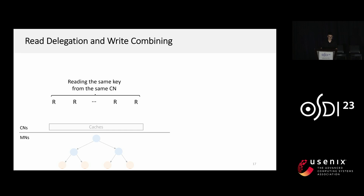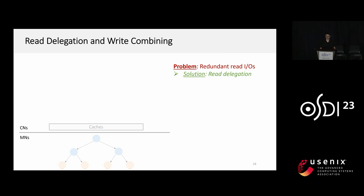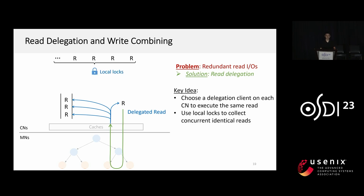The second design of SMART is the redelegation and write combining technique. For reads, when several clients read the same key from the same compute node, they conduct identical tree searches, introducing redundant read IOs that exhaust the limited IOPS of memory nodes. SMART proposes a redelegation technique: a delegation client is chosen on each compute node to execute the shared read and share its result with other waiting clients. Local logs are used to collect concurrent reads; the first client to acquire the local log becomes the delegation client and conducts a remote tree search, while other clients push themselves into a waiting queue.